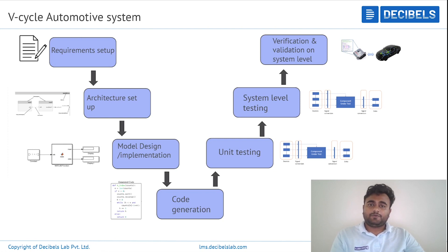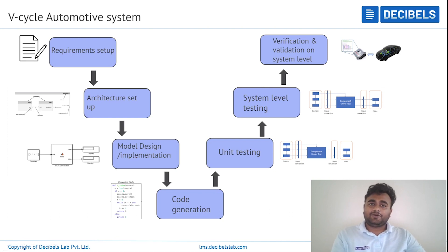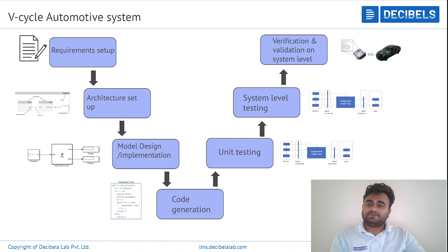On this slide we have represented a general format of the V-model for automotive software development. The V-model starts with requirement setup, where all design-related documents, testing-related documents — such as how the model has to be tested and what scenarios are involved — and architecture modeling documents are included. Once the requirement setup is done, it is passed to the design team by the system engineer.